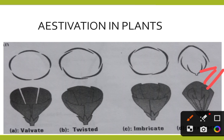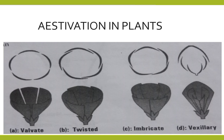The last type is vexillary aestivation. In this arrangement, the last two petals are fused, the middle two are separate, and the upper largest petal is the standard petal. The middle two petals are called wing petals, and the last two fused petals at the base are called keel petals. This type shows bilateral symmetry and is seen in legume plants like pea, groundnut, etc.